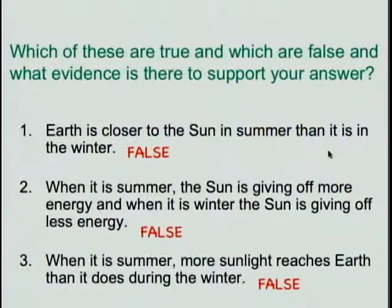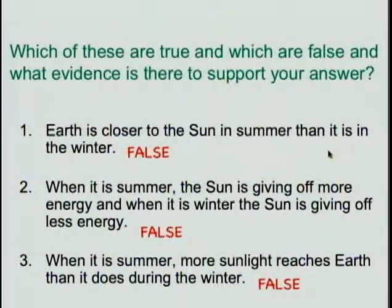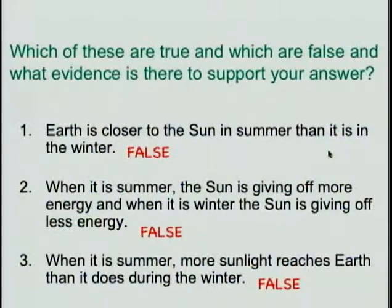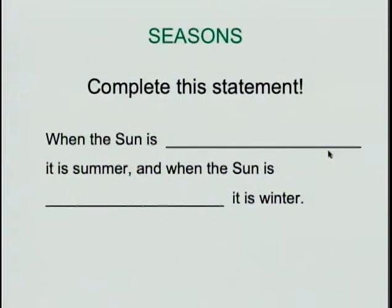All three statements are false. 'Earth is closer to the Sun in summer' doesn't even make sense as stated, because summer is different in the northern and southern hemispheres — so that's false. 'The Sun gives off more energy in summer and less in winter' is also false — the Sun doesn't vary in brightness this way. 'More sunlight reaches Earth in summer than in winter' is also false. You could restate it as: 'When it's summer in the northern hemisphere, more sunlight reaches the northern hemisphere than during winter' — that would be correct, but not the more general statement.